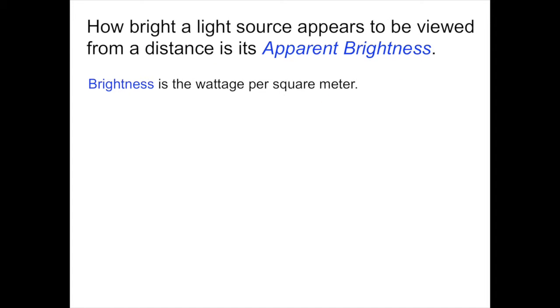The second quantity we can use to quantify brightness is called the apparent brightness. The apparent brightness is defined as how bright a light source appears to be when viewed from a distance. Put in wattage terms, brightness is not wattage, but wattage per square meter. How much the wattage, the luminosity, has been spread out over some area.